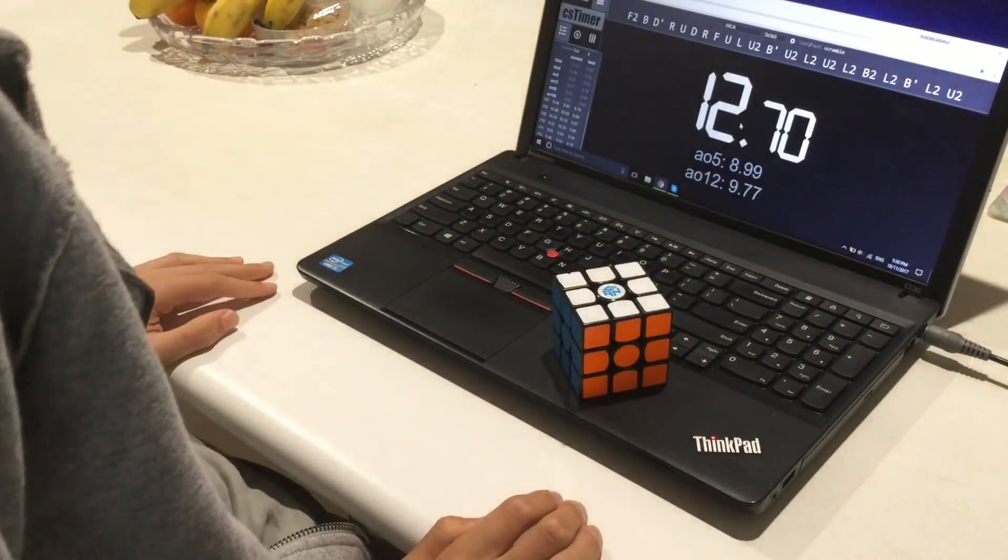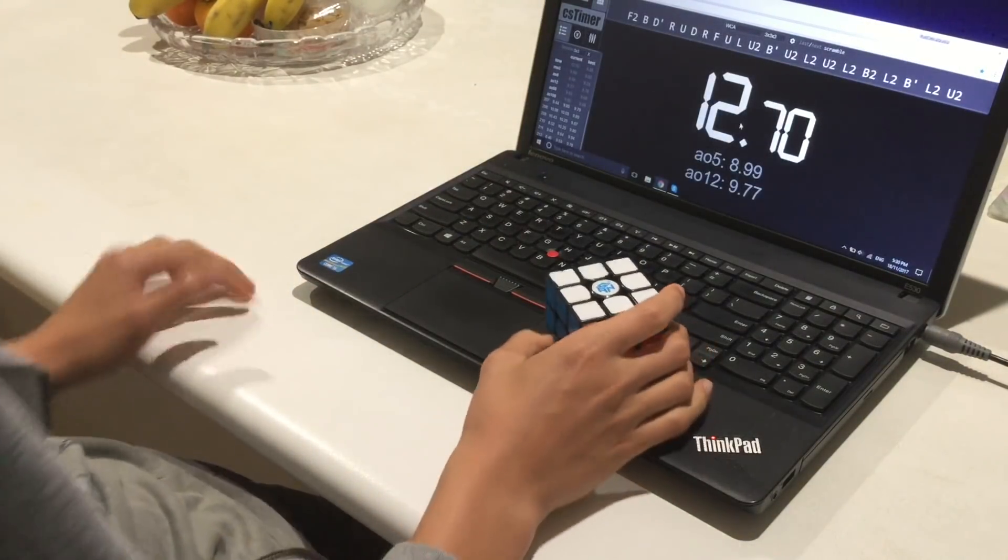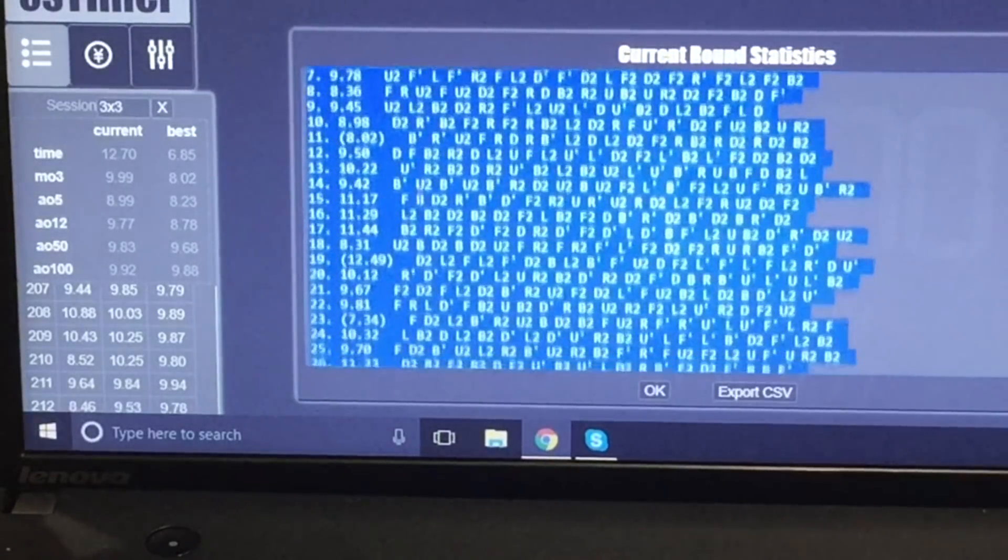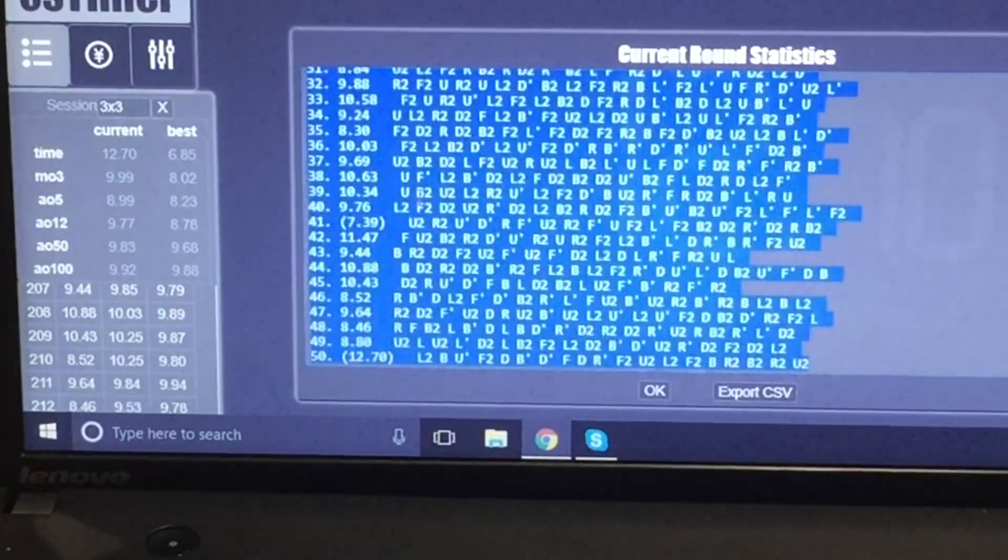So I ended up getting a 9.83 average of 50 featuring an 11 second average of five by the way, which as I said before is just a little bit faster than my global average. So, not a big difference.